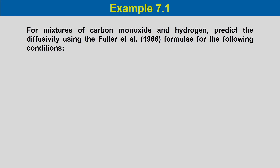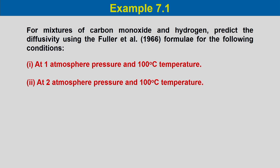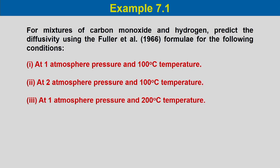Let us take an example to calculate the diffusion coefficient for a mixture of carbon monoxide and hydrogen. We need to predict diffusivity using the Fuller et al. 1966 formula for three conditions: Case 1 — 1 atmosphere and 100°C; Case 2 — 2 atmospheres and 100°C (temperature constant, pressure doubled); Case 3 — 1 atmosphere and 200°C (pressure constant, temperature doubled).